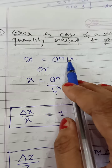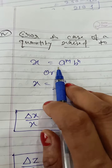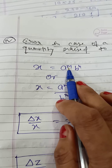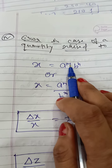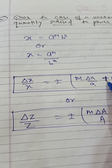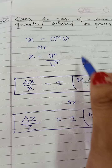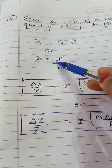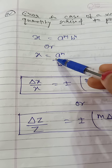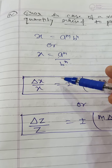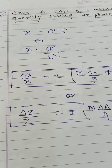For error in power form: if z equals a to the power m multiplied by b to the power n, then delta-z upon z equals plus minus m times delta-a upon a, plus n times delta-b upon b. The power multiplies the relative error.